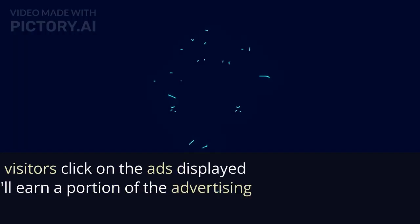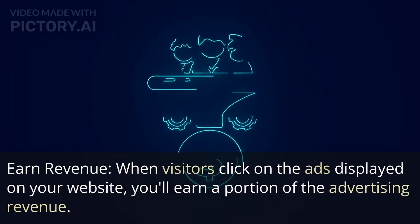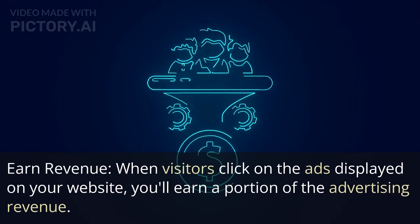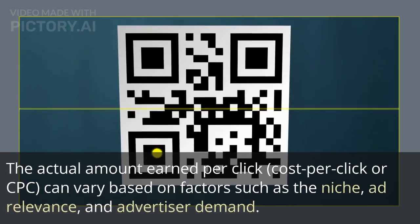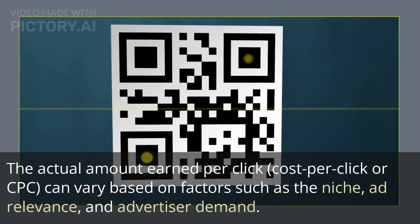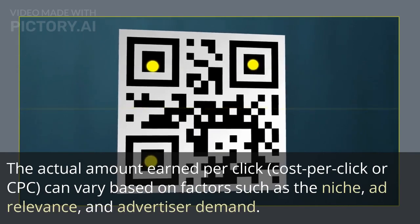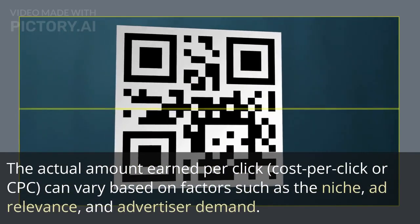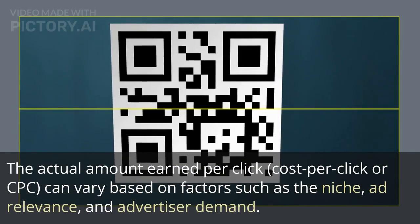Earn revenue when visitors click on the ads displayed on your website — you'll earn a portion of the advertising revenue. The actual amount earned per click, known as cost per click or CPC, can vary based on factors such as the niche, ad relevance, and advertiser demand.